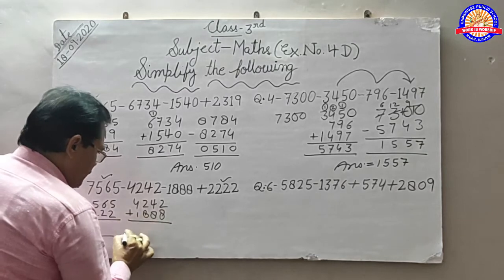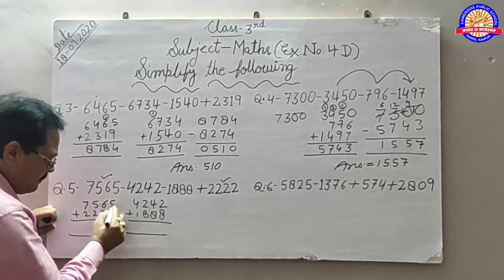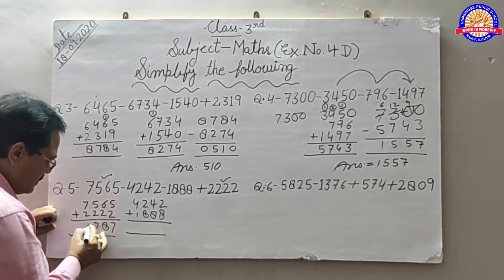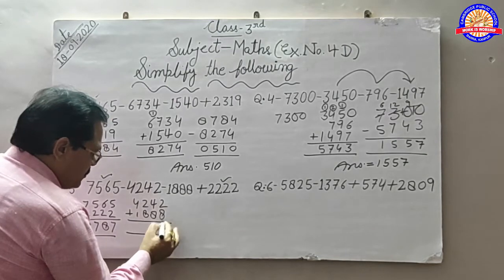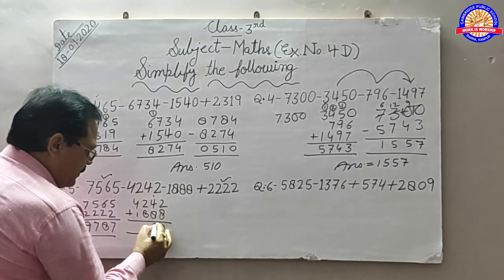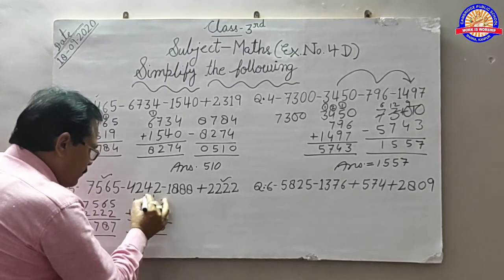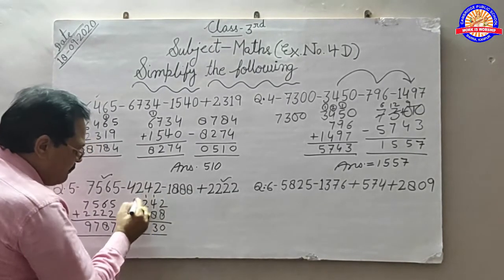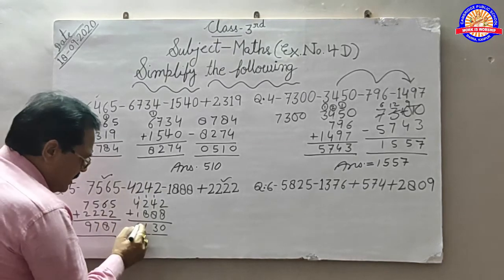दोनों को plus: 5, 2, 7. 6, 2, 8. 7, 9. 8 plus 2 makes 10, write 0, carry 1. 8, 4, 12, carry 1 makes 13. Write 3, carry 1. 8 plus 1 plus 1 makes 11. Write 1, carry 1. 4, 5, 1, 6.